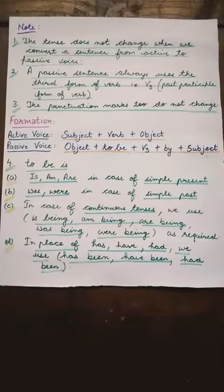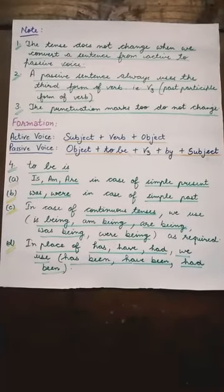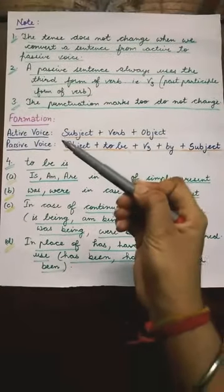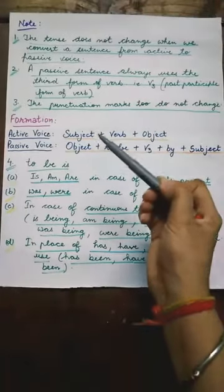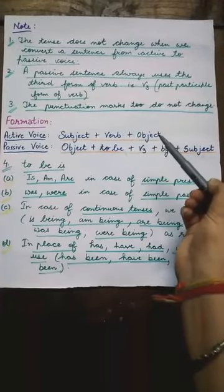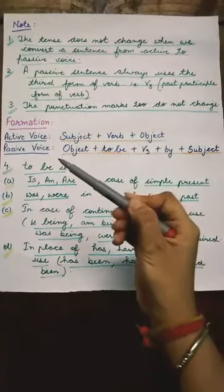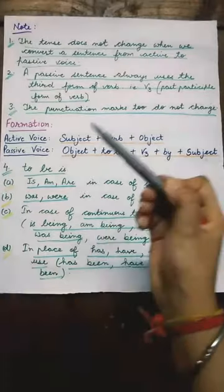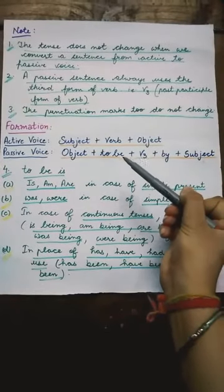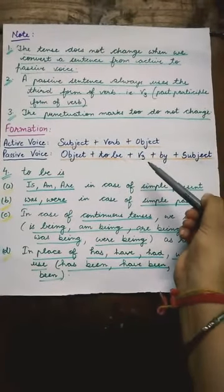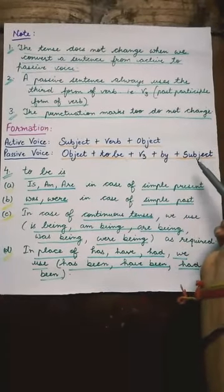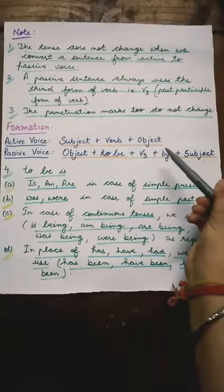Now let's read the formation rule जिसे हम follow करते हैं while changing the sentence from active to passive voice. Our sentence structure always is: first subject, after that verb, and at last object. जब हम sentence को passive voice में change करेंगे, तो हम subject की place पे object को लिखेंगे. After that we write to-be verbs, then third form of verb, then 'by', और at last subject in place of object.